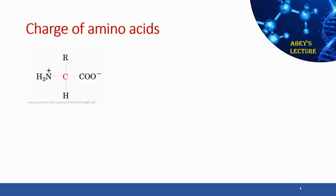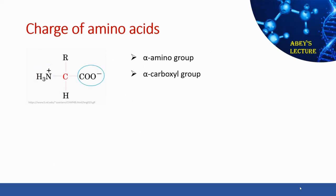Amino acids have three functional groups that could contribute to their overall charge: the alpha amino group, the alpha carboxyl group, and the side chain or R group. The charge contribution from side chains depends on the identity of the amino acid. Amino acids with ionizable side chains have all three functional groups contributing to their overall charge.